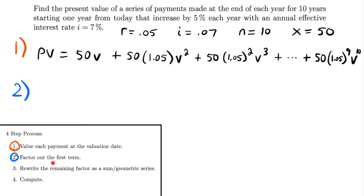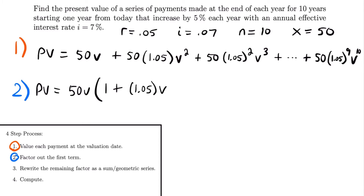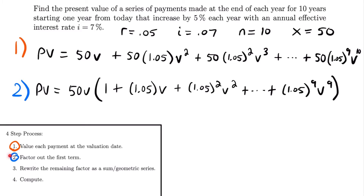Step two is to factor out the first term of the series, which is 50v. Doing so gives: PV = 50v × [1 + 1.05·v + 1.05²·v² + ... + 1.05⁹·v⁹]. We pulled the 50 and one factor of v out of every term, leaving this bracketed series. That completes step two.